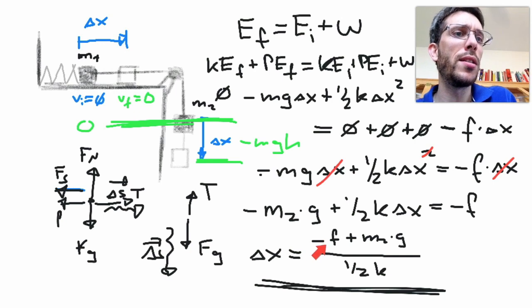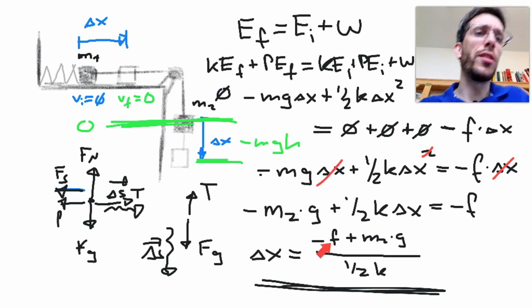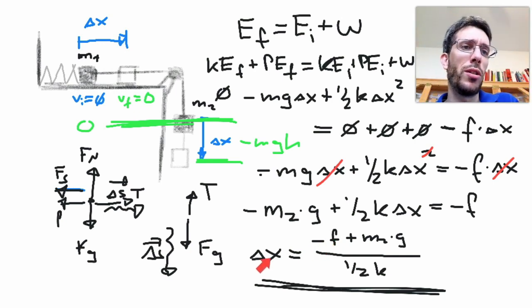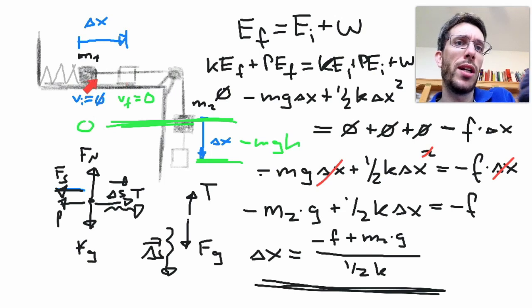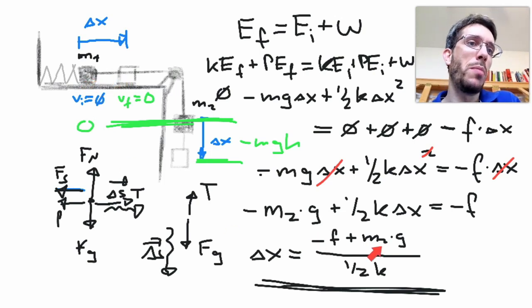Now let's see if this makes any sense. So the bigger the friction is, the shorter the distance is that the block will slide until it comes to a stop, which kind of makes sense. The bigger my mass 2 or my gravitational constant is, the further the system will go down. This also makes sense.